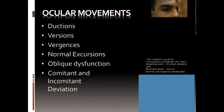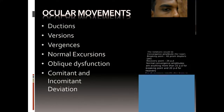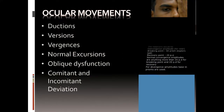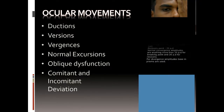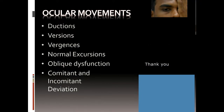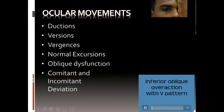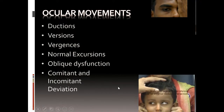How you write it in your book is very important. You write: convergence for near, breaking point 40 prism diopters, recovery point 20 prism diopters. Normal convergence amplitudes are around 25 prisms breaking point and 20 prisms recovery. For divergence amplitude you reverse this, but divergence amplitudes are very low — as low as 12 to 14 prisms.